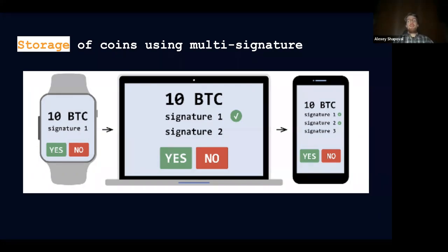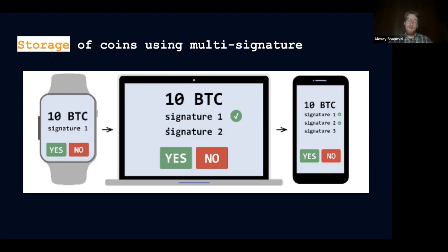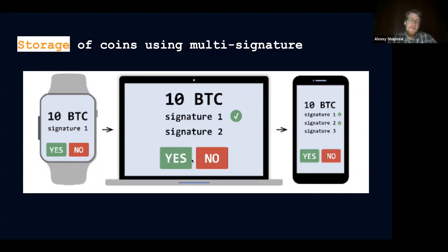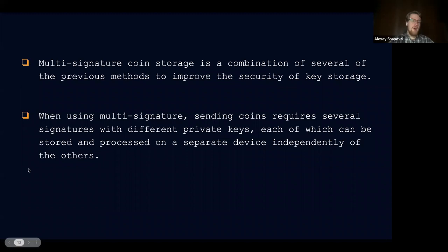When using multi-signatures, sending coins requires several signatures with different private keys, each of which can be stored and processed on a separate device independently. However, it must be done mindfully. For example, if you make a 3-of-3 multi-signature, losing one device means you lose the coins forever if you have no backups. Also, multi-signature only makes sense if each device keeps one and only one key. Having two of three keys on the same device would destroy the whole purpose of multi-signature — it becomes simulated, not real, security.